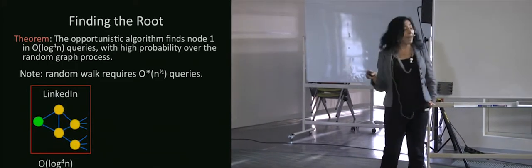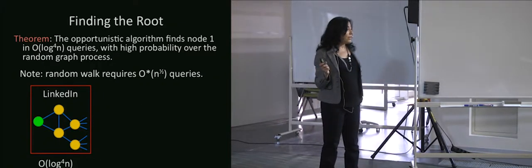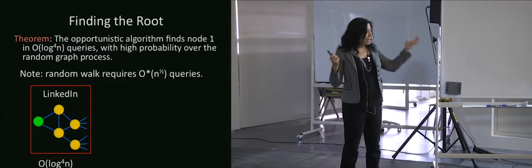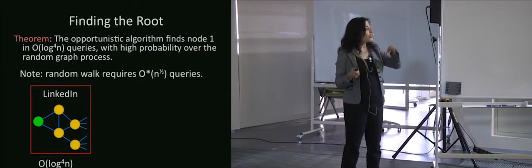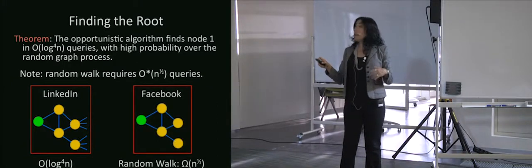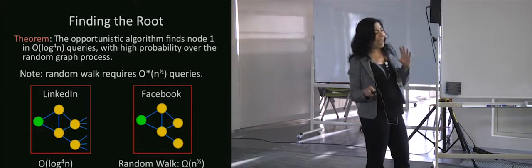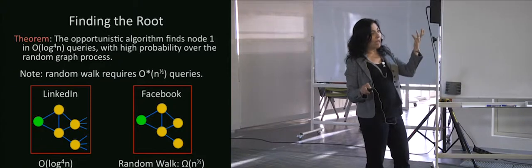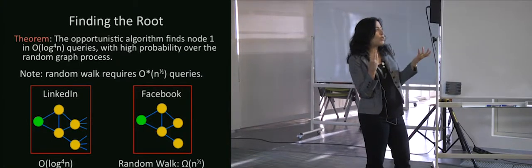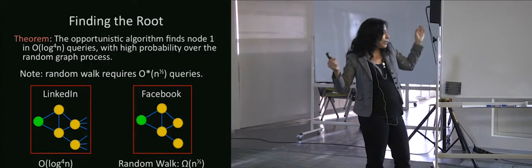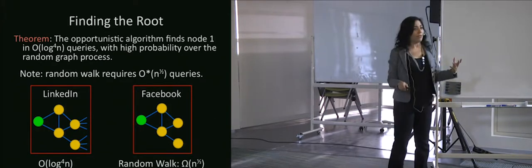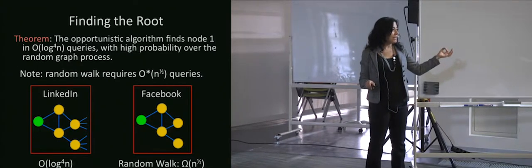On LinkedIn, since it gives you one-local information, if you were opportunistic and did a greedy algorithm given the information LinkedIn provides, you could find the root pretty quickly. On Facebook it would take a really long time, and it's interesting because after we came out with this result, Facebook changed its rules and showed you a little more — because I think at first you don't imagine that a slight difference like whether you can see the number of neighbors is going to create this huge difference in time needed to find the root.